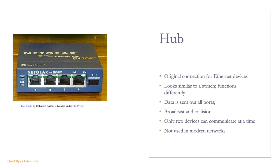Hubs are the original connection device for connecting devices together on a network. They look similar to a switch but function very differently. When a computer sends data to a hub, the data is sent out all ports and only the device the data is meant for accepts it. This is very inefficient and causes collisions on the network — only two devices can communicate at a time and the others must wait until the path is clear. Hubs are not used in modern networks.